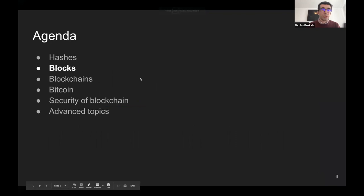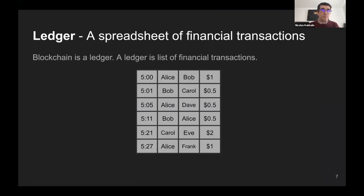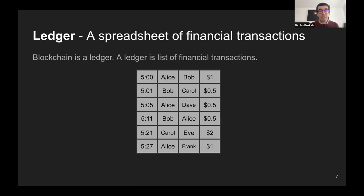Now let's talk about blocks. To talk about blocks, I'll start talking a little bit about finance and ledgers. As you know from your finance classes, a ledger is essentially a spreadsheet of financial transactions. The fundamental facility of a blockchain is essentially a ledger - a decentralized ledger. A ledger could look like this: it's a list of financial transactions. At 5 PM Alice gave to Bob $1, at 5:01 Bob gave to Carol half a dollar, and so on. They are transactions and they have a timestamp.